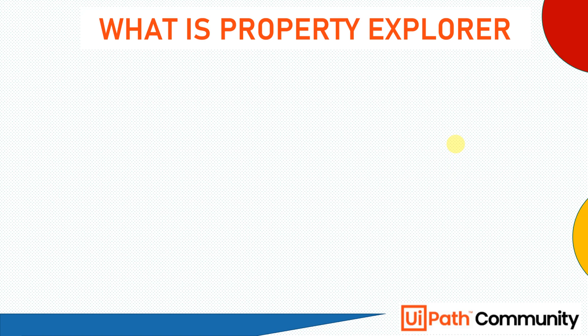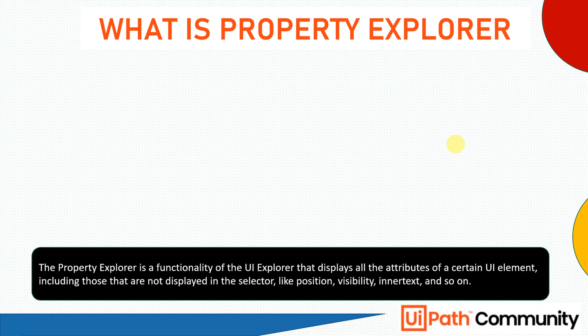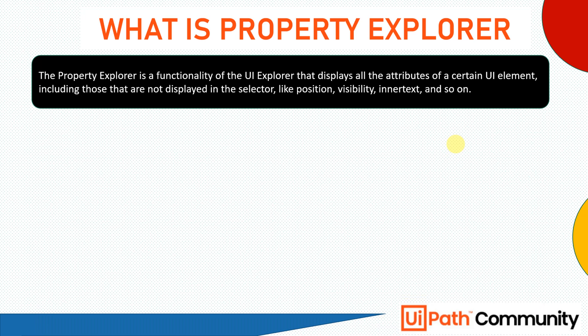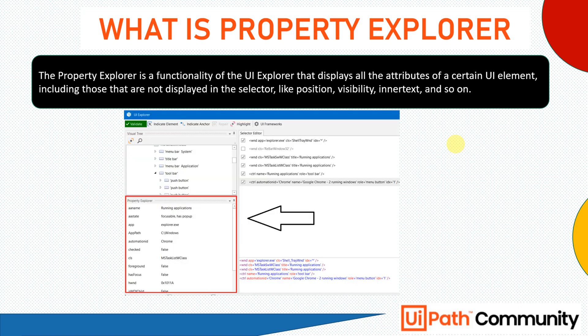Before jumping to the demonstration, let us see what exactly a Property Explorer is in the context of selectors. The Property Explorer is the functionality of UI Explorer that displays all the attributes of a certain UI element, including those not displayed in the selector, like position, visibility, and inner text.